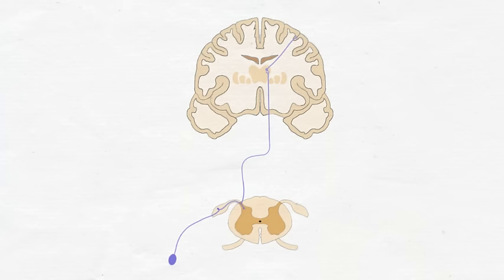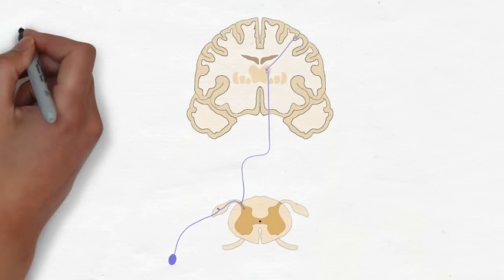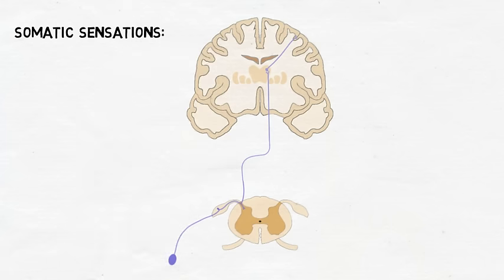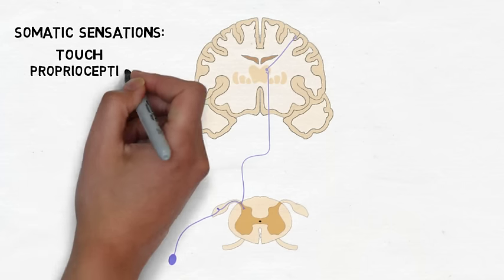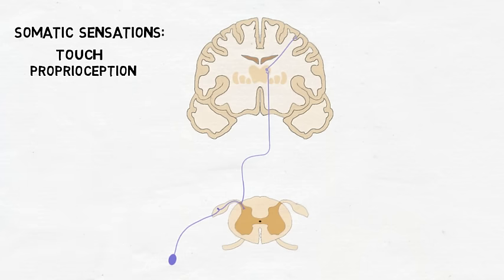The primary somatosensory cortex is responsible for processing somatic sensations, or sensations from the body, that include touch, proprioception or the position of the body in space, nociception or pain, and temperature.